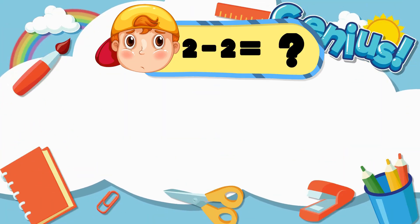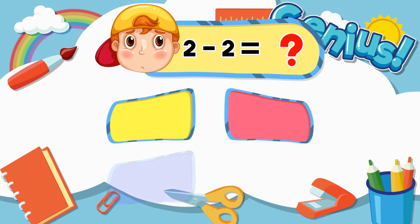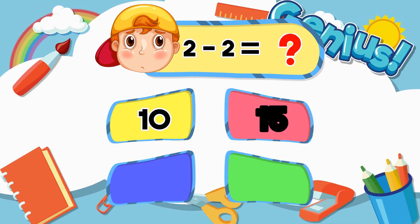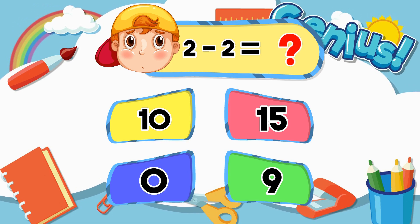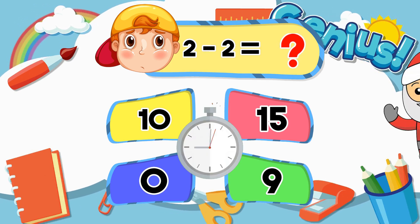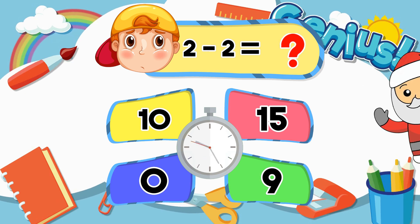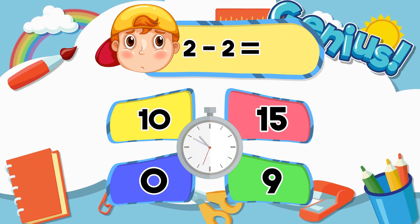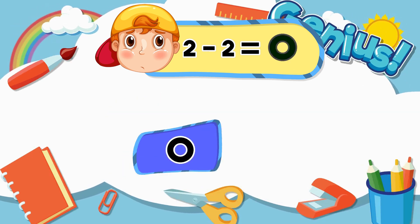What is two minus two? Options: Ten, Fifteen, Zero, Nine. Answer: Zero.